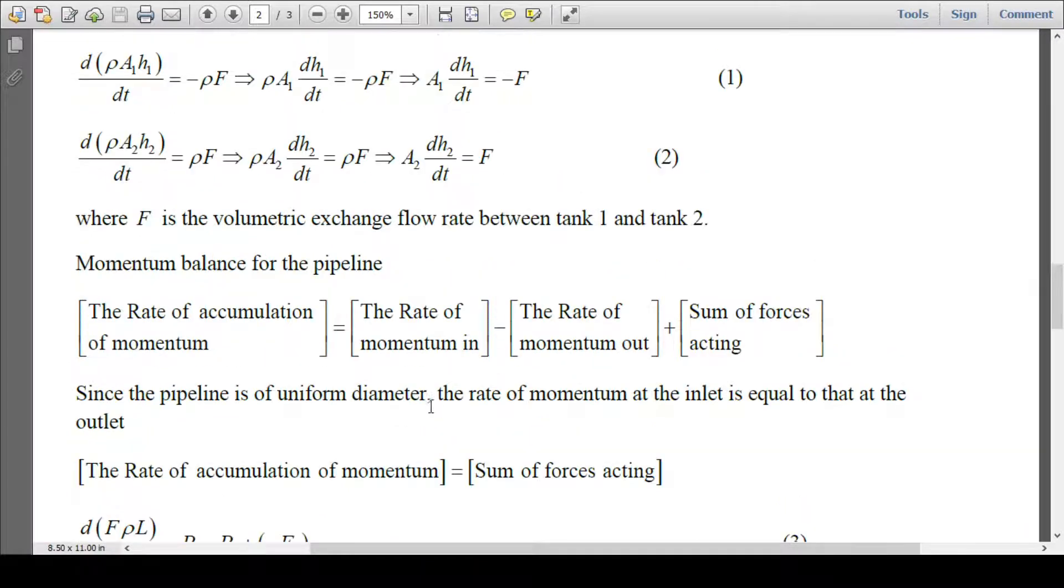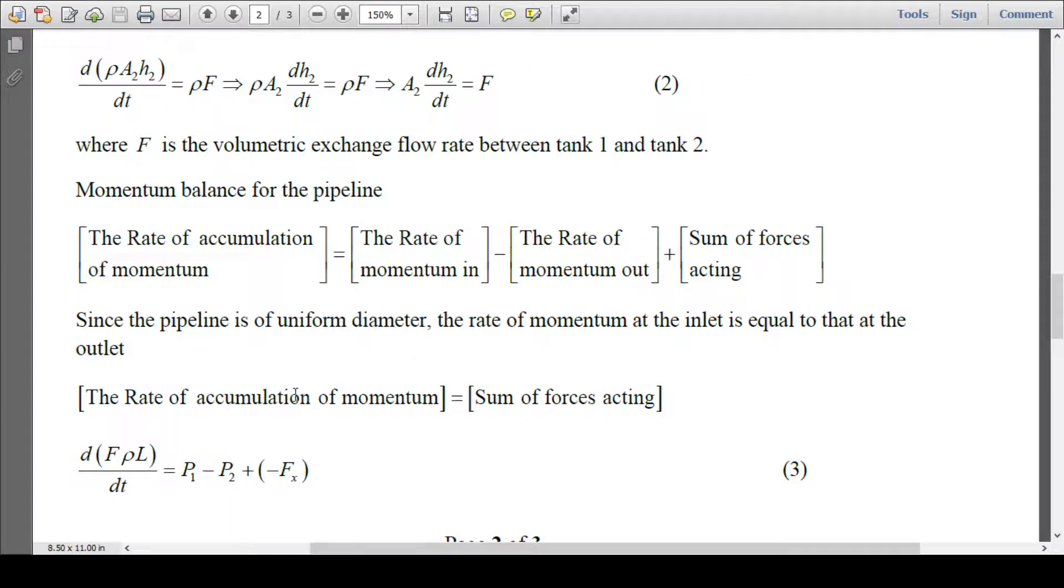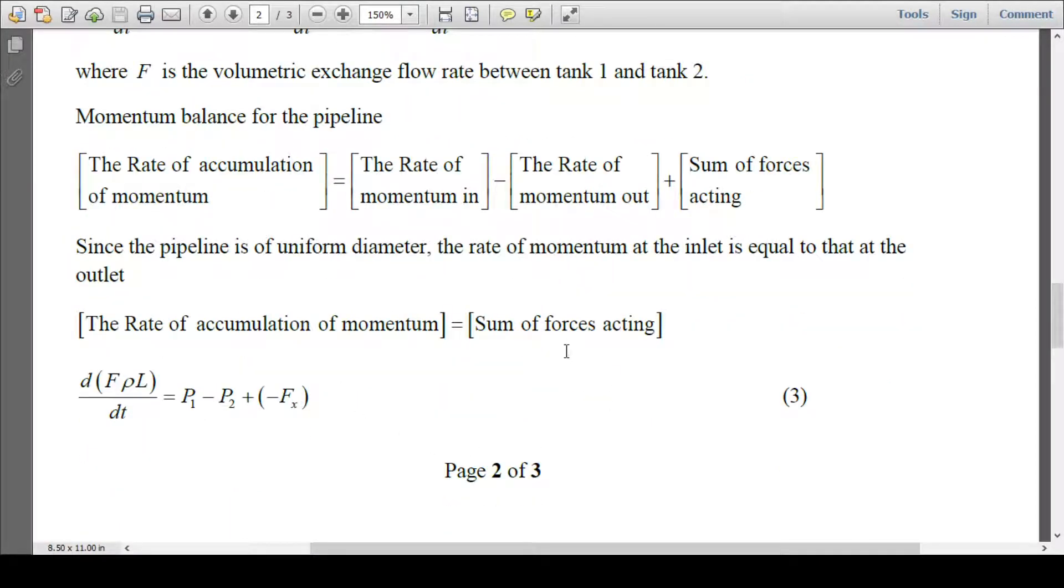If we do the momentum balance for the pipeline, the rate of accumulation of momentum equals the rate of momentum in, rate of momentum out, plus sum of forces acting on the system. Since the pipeline is of uniform diameter, rate of momentum at the inlet equals that at the outlet. So rate of accumulation of momentum would equal sum of forces.